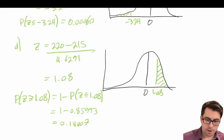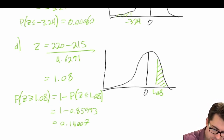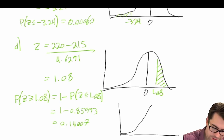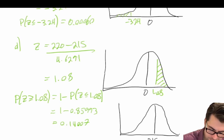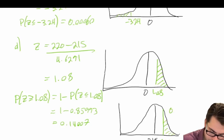So 0.14007 is the probability that we see a sample mean greater than 220. We can visualize this using our normal curve centered around 215, with an observed value of 220 — the green shaded region to the right represents 0.14007.